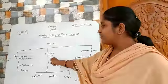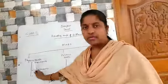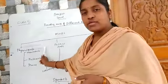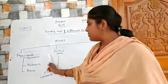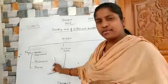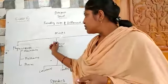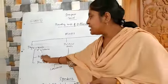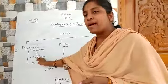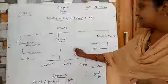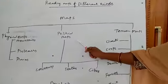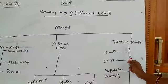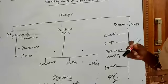Maps are divided into 3 types. Can you see children, more clearly? Maps are divided into 3 types. First one is the physical maps. Second one is the political maps. And third one is the thematic maps.